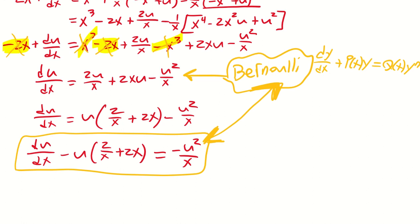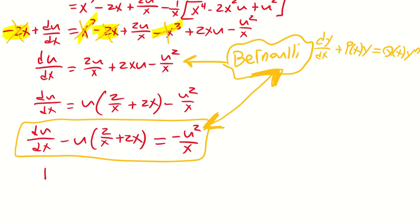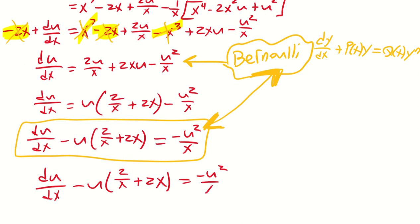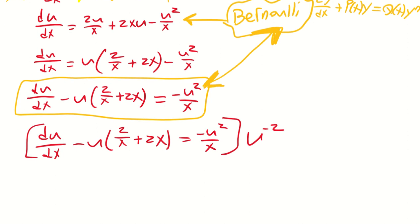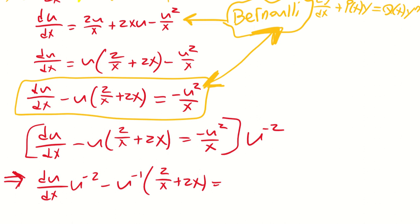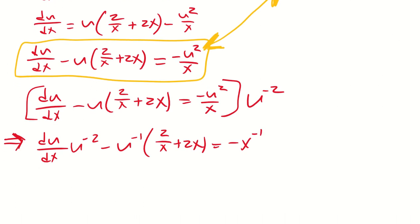We know how to work with that. We take the equation du/dx minus u(2/x + 2x) equals minus u² over x, and multiply through by u to the minus 2 power. This gives: (du/dx)·u⁻² minus u⁻¹·(2/x + 2x) equals minus x⁻¹. Now we perform a substitution — we use w, stipulating that w equals u to the minus 1. Taking the derivative, dw/dx equals minus u⁻²·(du/dx).